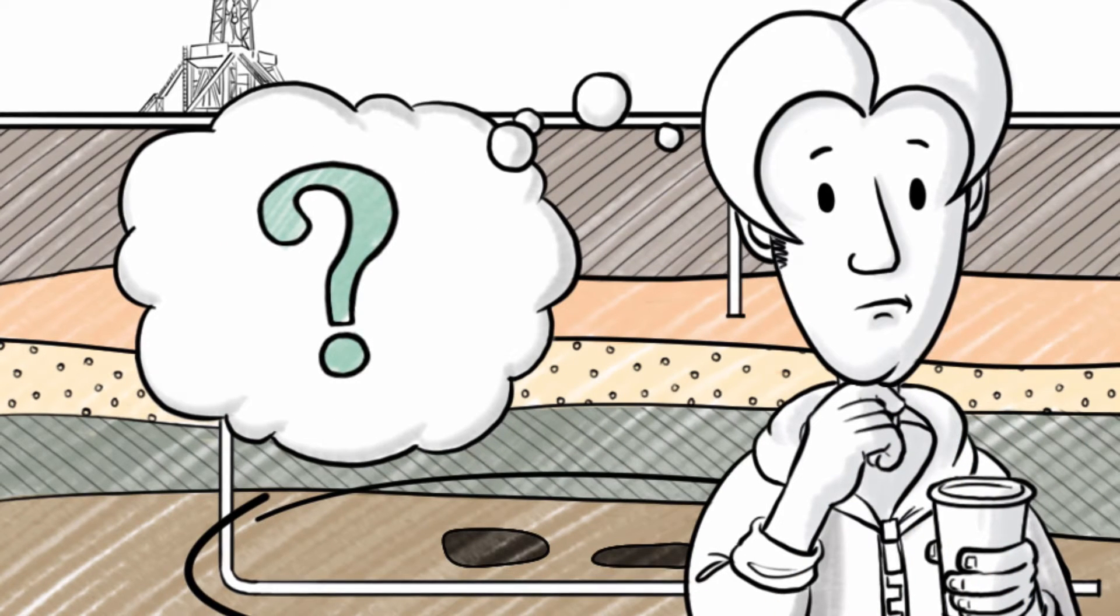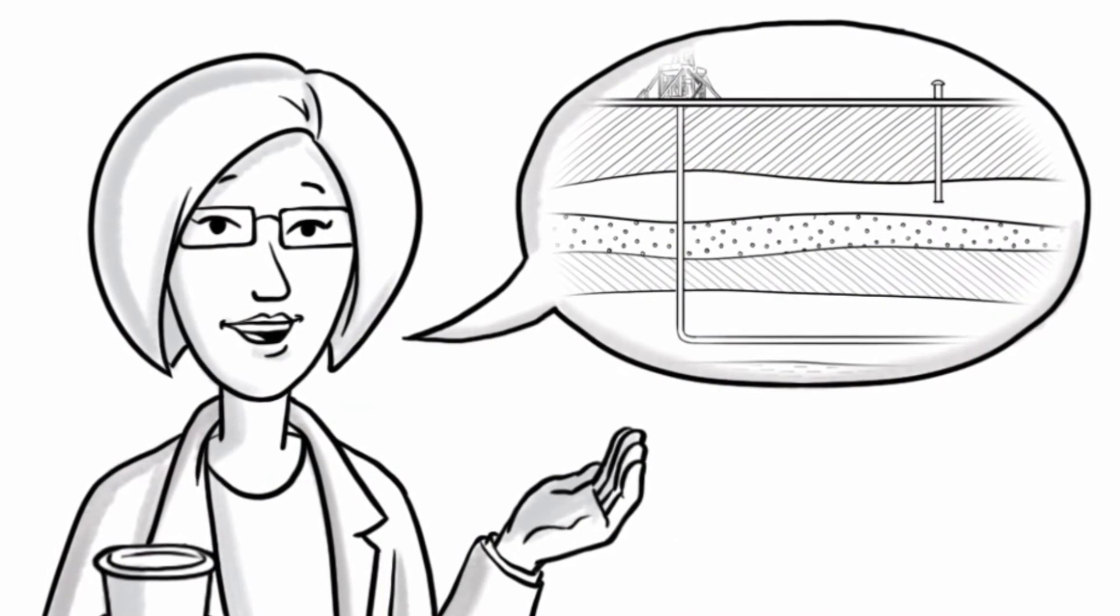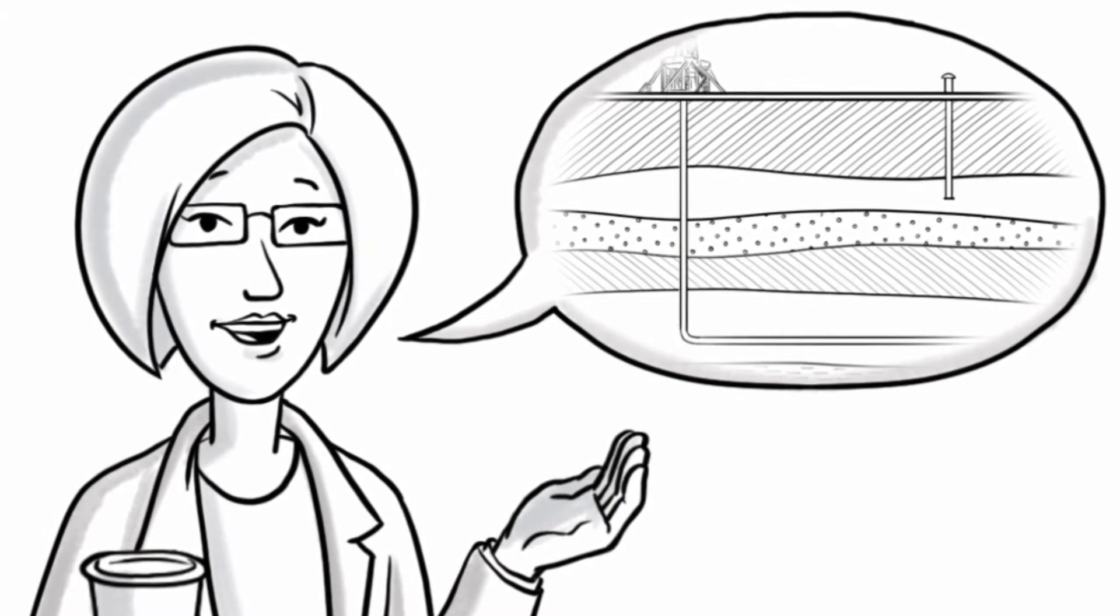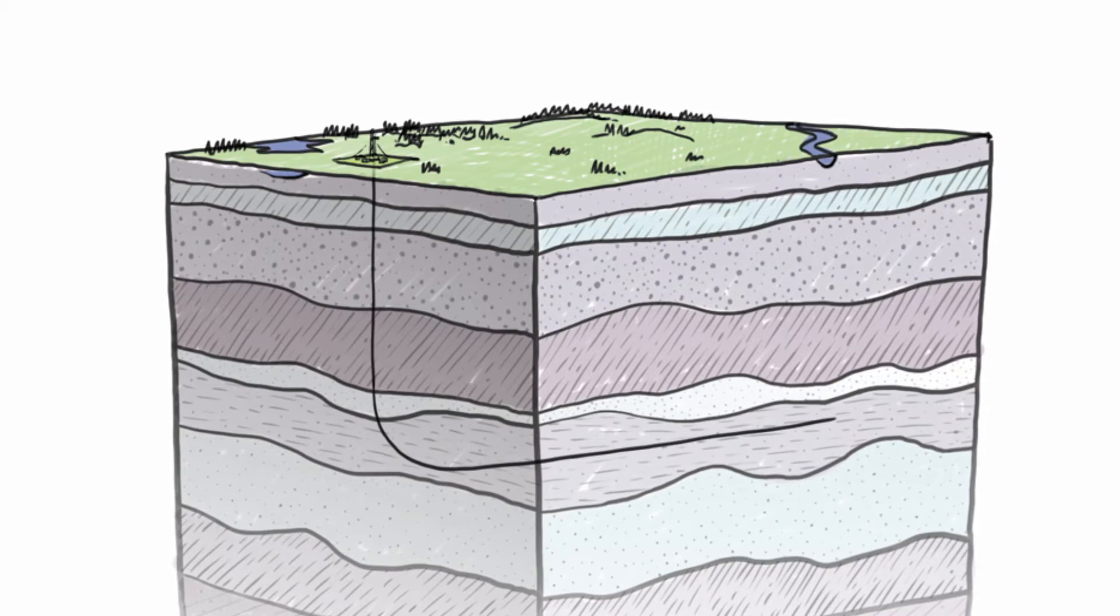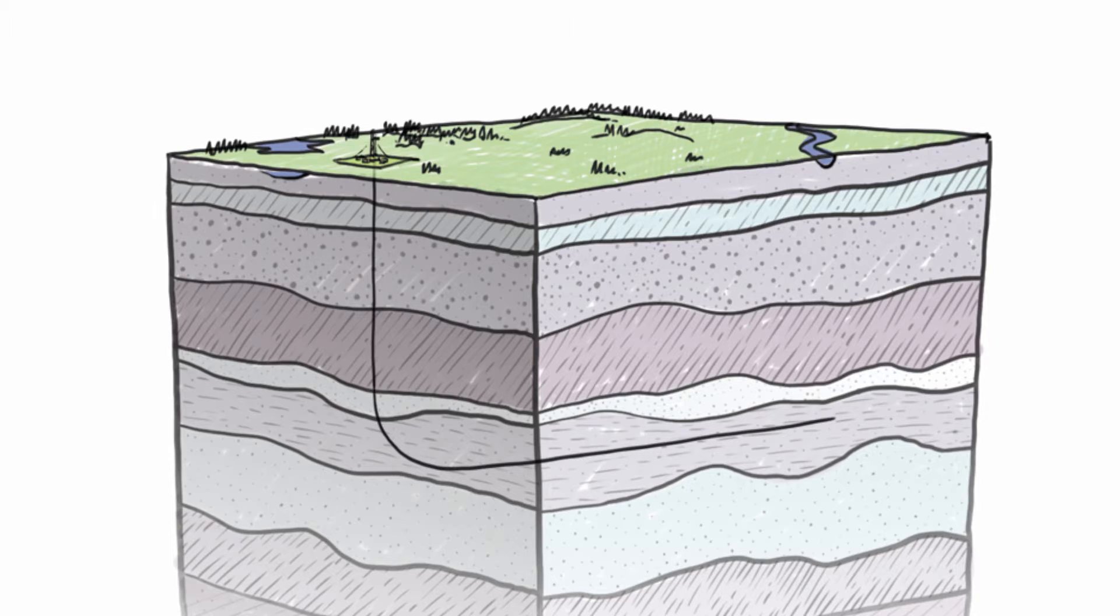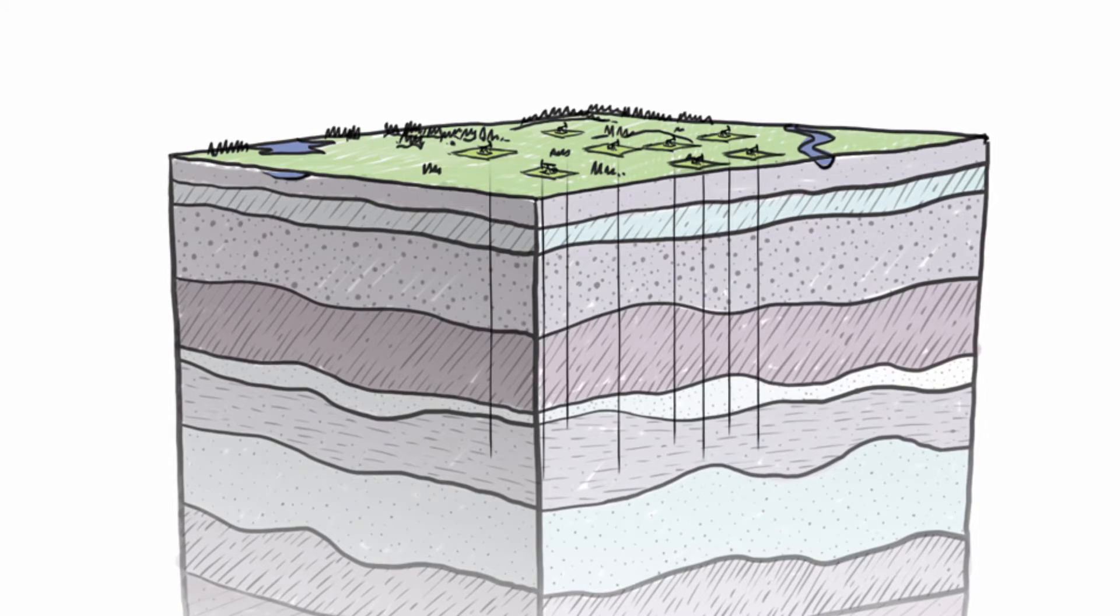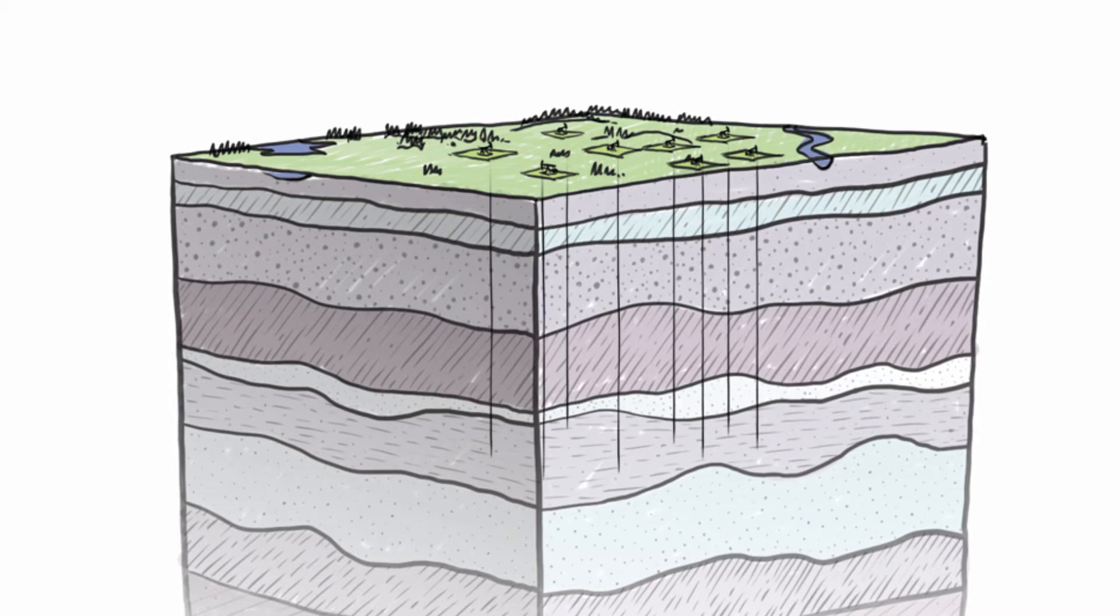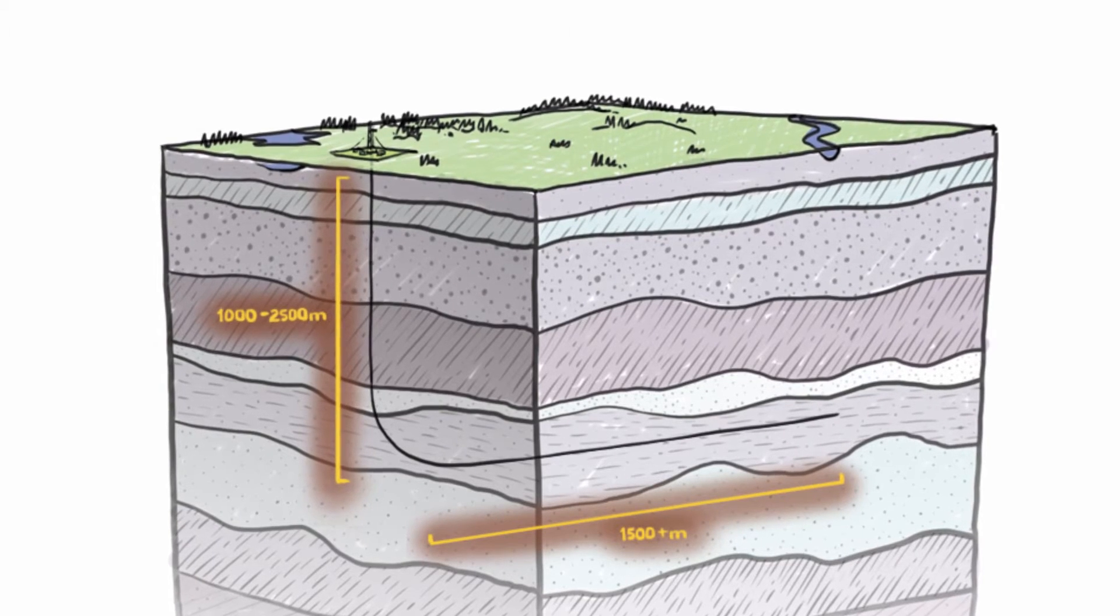Keith wonders how hydraulic fracturing actually works. Michelle tells Keith that both vertical and horizontal wells can be hydraulically fractured. However, horizontal wells are often used to reduce the footprint at the surface and are more efficient. For example, an operator can use this method to replace eight vertical wells with one horizontal one and drill from a single place.